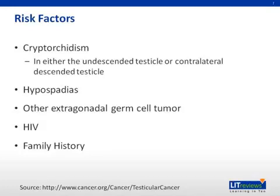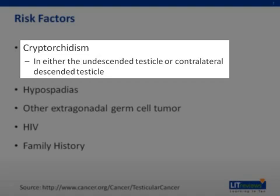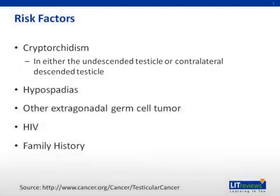The major risk factors for testicular cancer include cryptorchidism and hypospadias, both of which represent genitourinary developmental abnormalities. Cryptorchidism can result in testicular cancer either in the undescended testicle or the contralateral descended testicle. The development of an extra-gonadal germ cell tumor in an alternative site, such as the mediastinum or pineal area, can also portend elevated risk. HIV is an increasingly recognized risk factor, and to a lesser extent, family history.